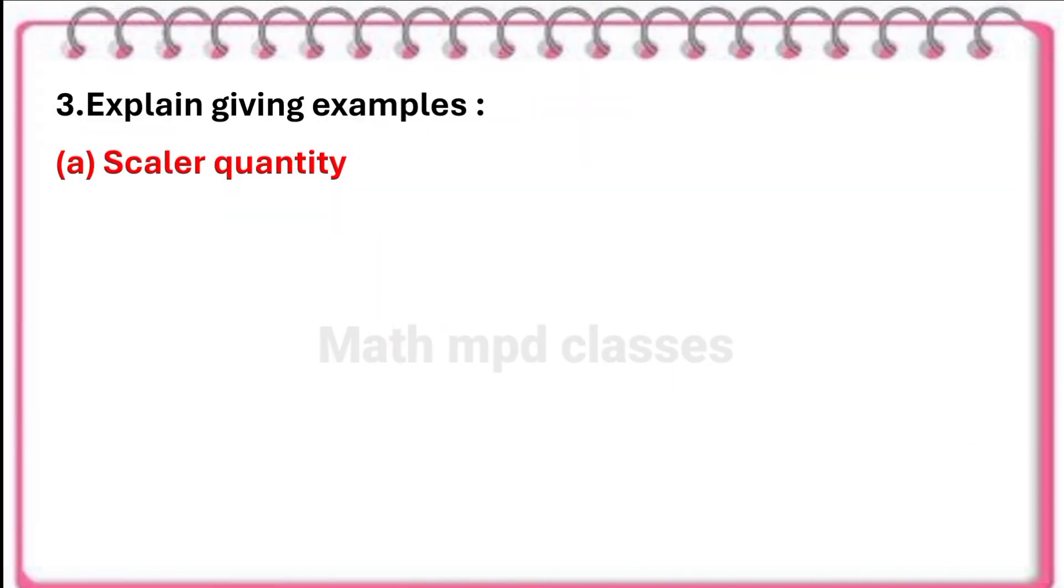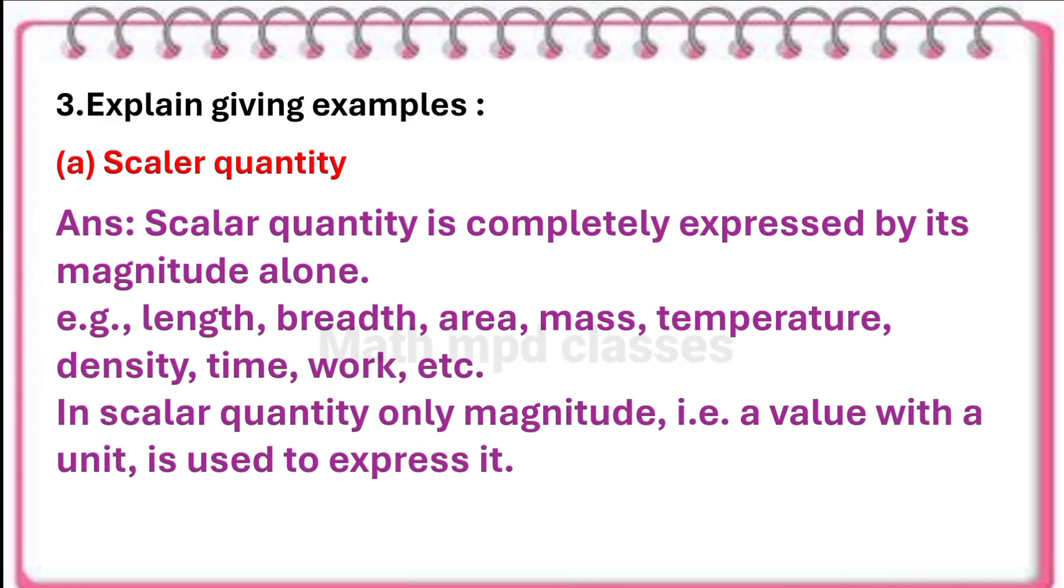Question number three, explain, giving examples. First, scalar quantity. Answer: scalar quantity is completely expressed by its magnitude alone. Examples: length, breadth, area, mass, temperature, density, time, work, etc.